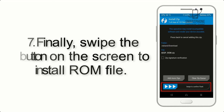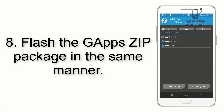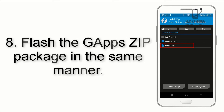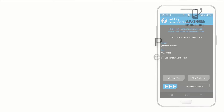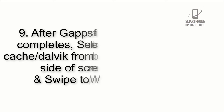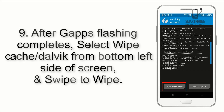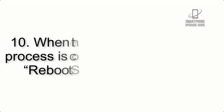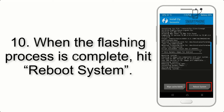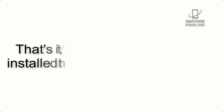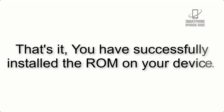Step 7: Swipe the button on the screen to install the ROM file. Step 8: Flash the GApps zip package in the same manner. Step 9: After GApps flashing completes, select Wipe Cache and Dalvik from the bottom left side of the screen and swipe to wipe. Step 10: When the flashing process is complete, hit Reboot System. That's it — you have successfully installed the ROM on your device.